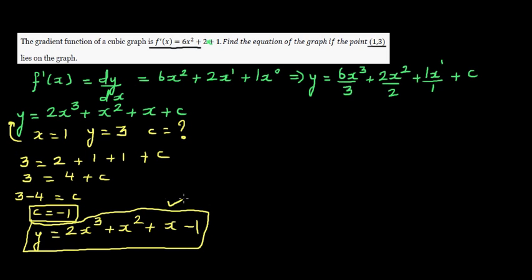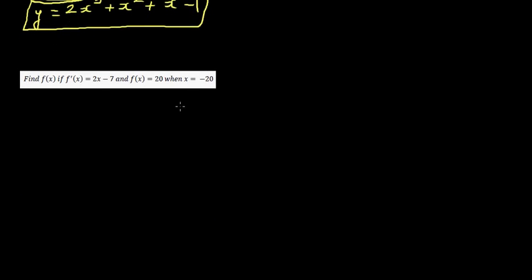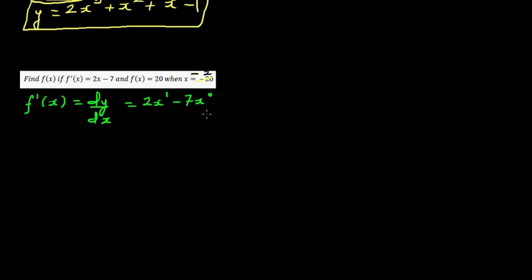One more question, done the same way. Note: there is a mistake — this is minus 2, not minus 20. So what is given: f'(x) = dy/dx = 2x - 7. The additional information given is when x is -2, y (or f(x)) is equal to 20. These are the two pieces of information: the gradient function, and the point.